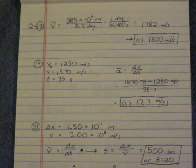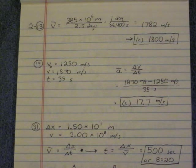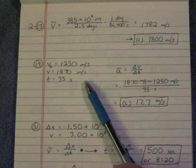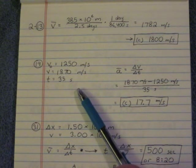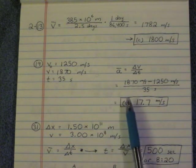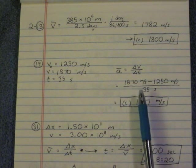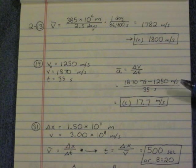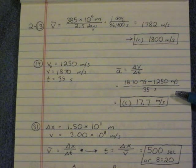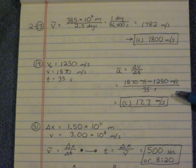Question 19, average acceleration to boost a spacecraft. So here we have the initial velocity is 1250, final velocity 1870 meters per second. It takes place over 35 seconds. So average acceleration is change in velocity over change in time. You do the difference, change is always final minus initial, divided by 35 seconds, and you get 17.7 meters per second squared.